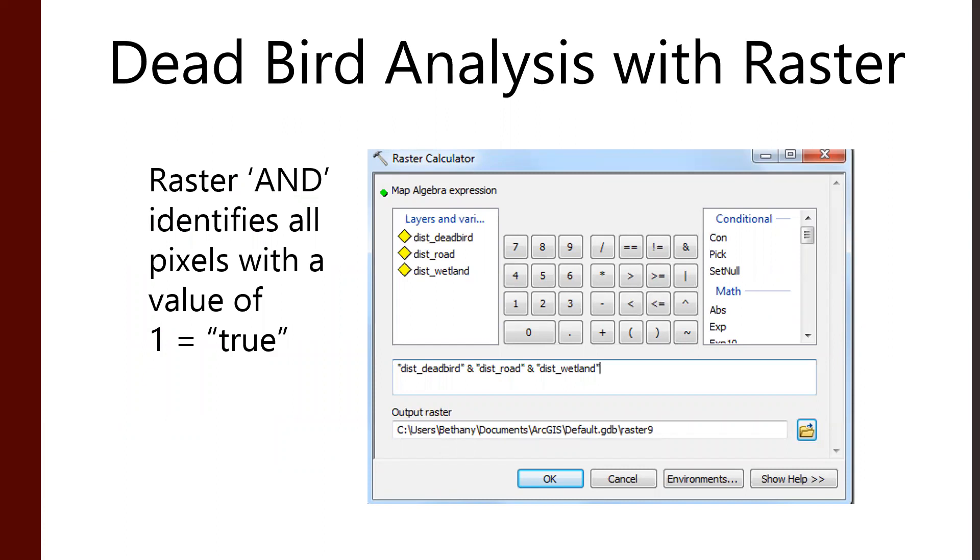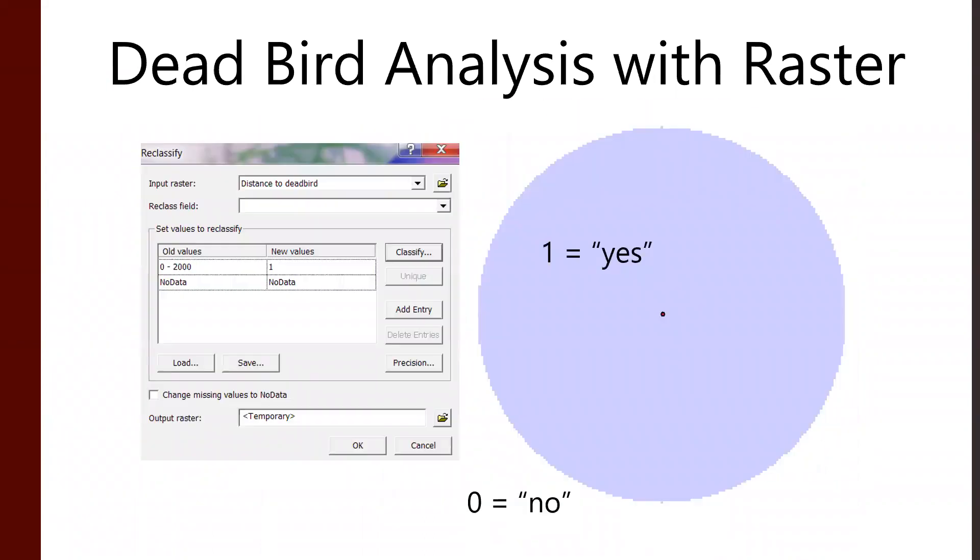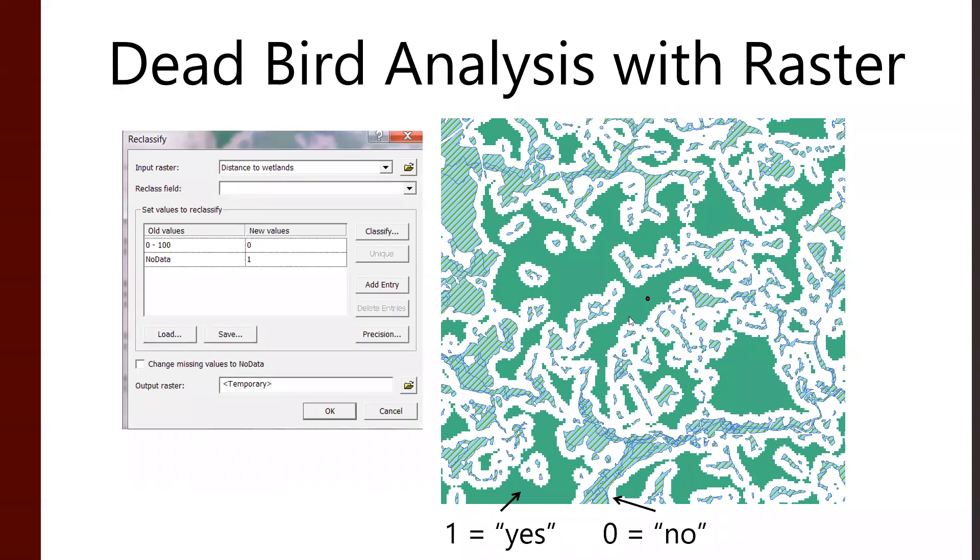Now, instead of doing an erase or an overlay operation like we might in vector mode, here we can say, okay, I just want everything in the bird buffer, in the road buffer, and in my little safety zone. So, in this case, clever, right? We've taken everything that's within the zone 0 to 100 and said, no, that's bad, zero, bad. Everything else that's no data or that was no data in the original, we said, no, that's good.